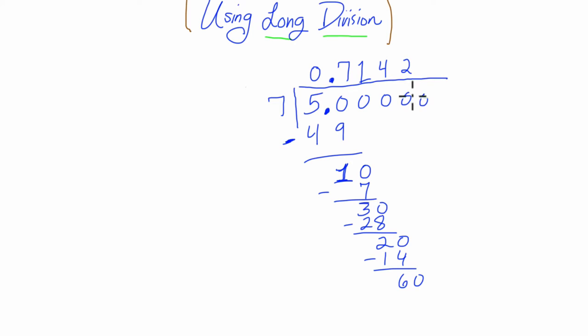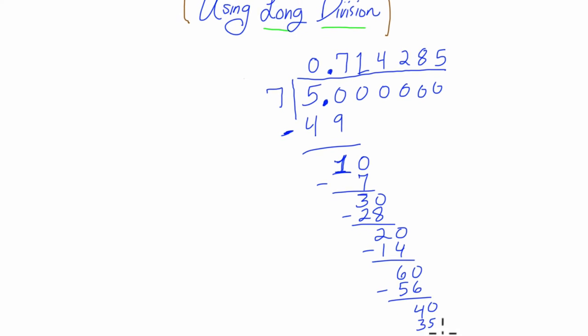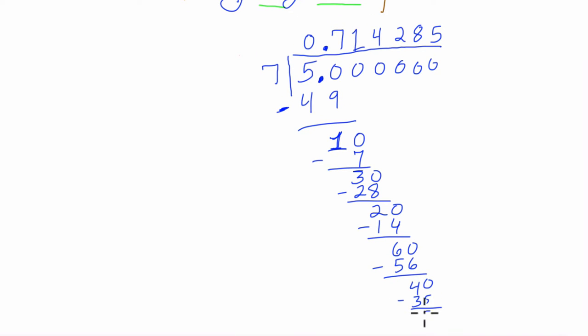7 goes into 60 eight times, 7 times 8 is 56, and 60 minus 56 is 4. Carry the zero here, and 7 goes into 40 five times, 7 times 5 is 35, and 40 minus 35 is 5.